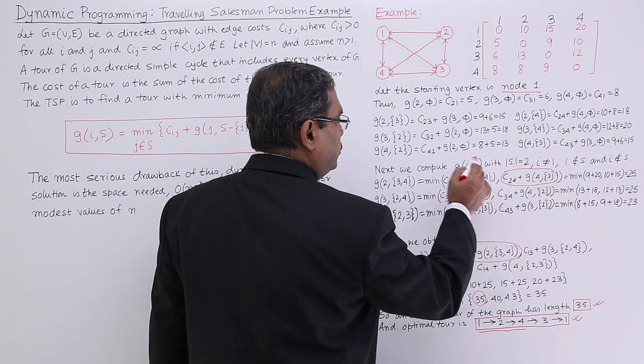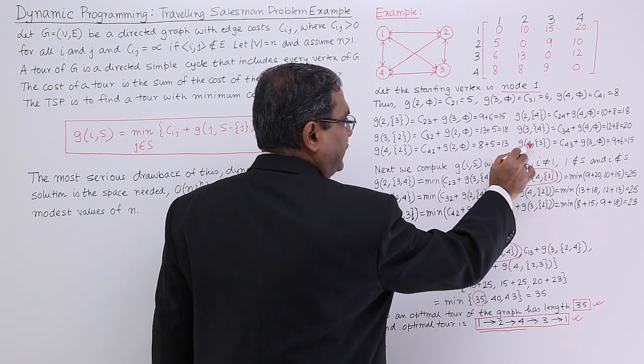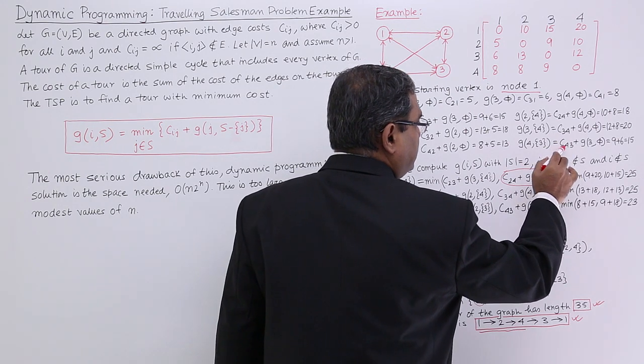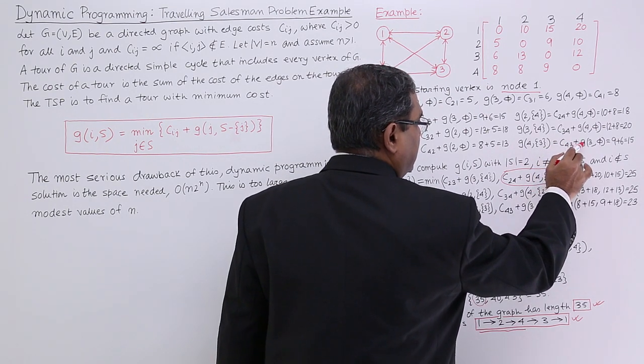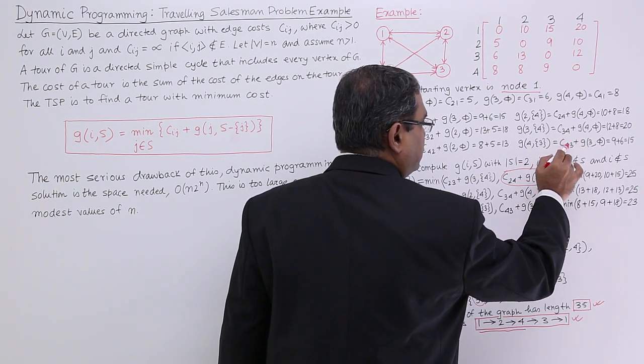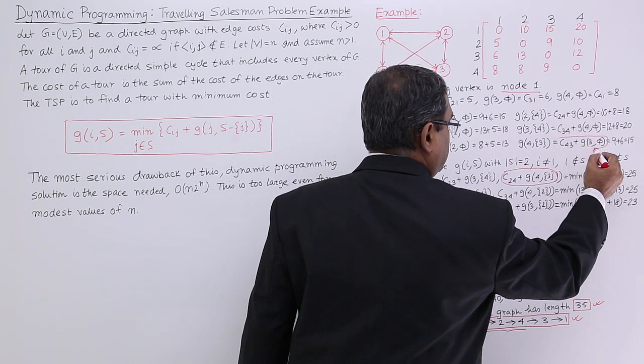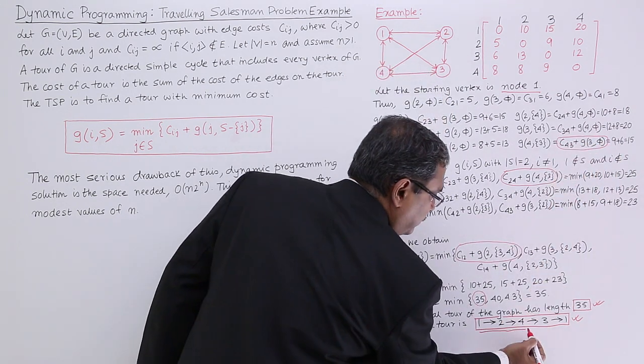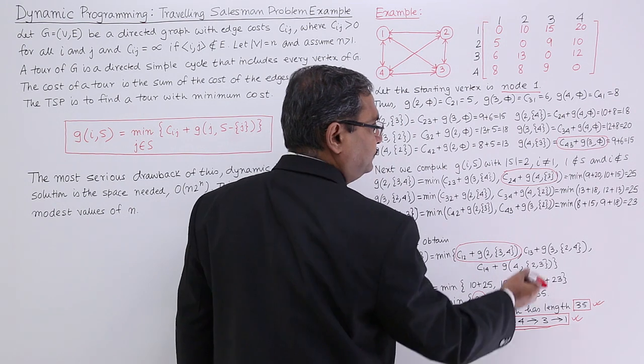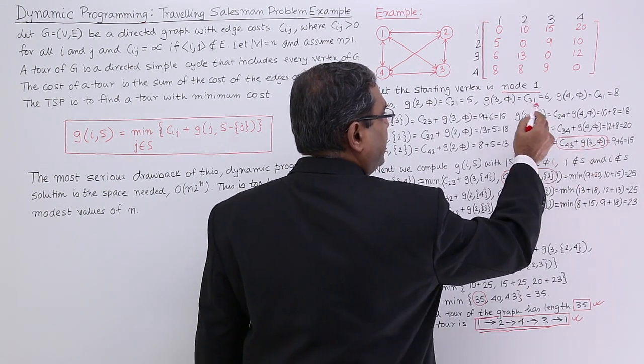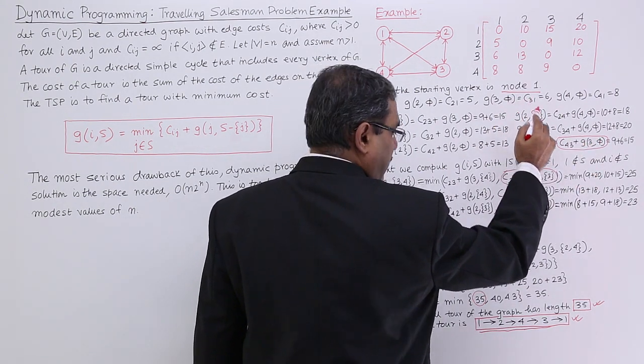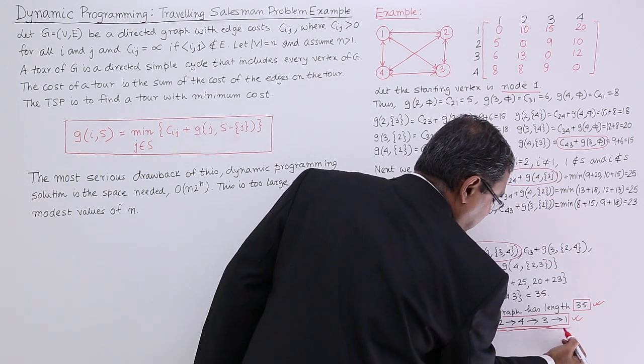G(3,{4}), C43 plus G(3,φ). C43, I should consider this one now. From 4 I should reach to 3. Now G(3,φ) means C31. I am reaching to 1 now. My starting node will be 1 and my terminating node should be also 1.